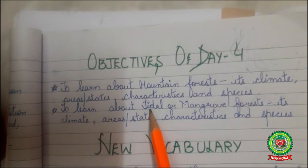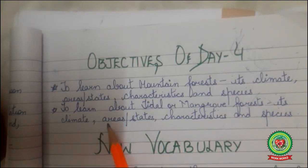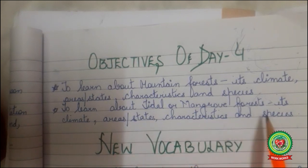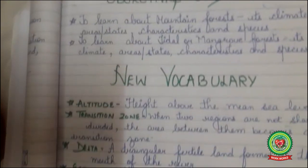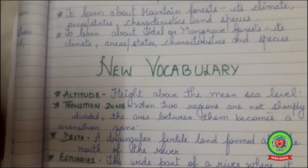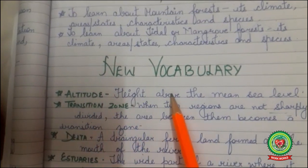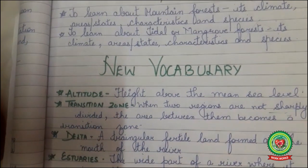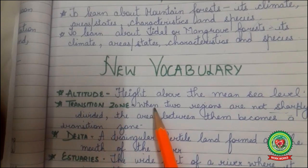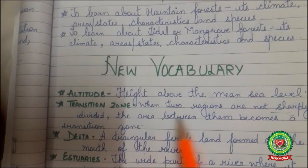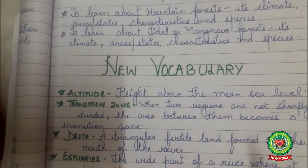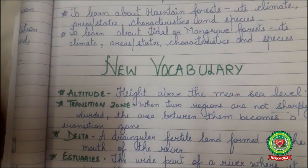We will also learn about tidal or mangrove forest: its climate, area, state, characteristics and species. While going through these topics we will also learn several new words. The first word, altitude, means height above the mean sea level. Transition zone means when two regions are not sharply divided, the area between them becomes a transition zone — simply, the zone where the change starts.